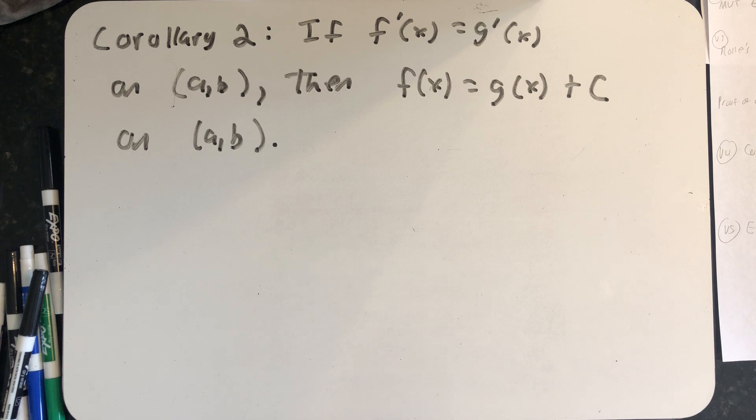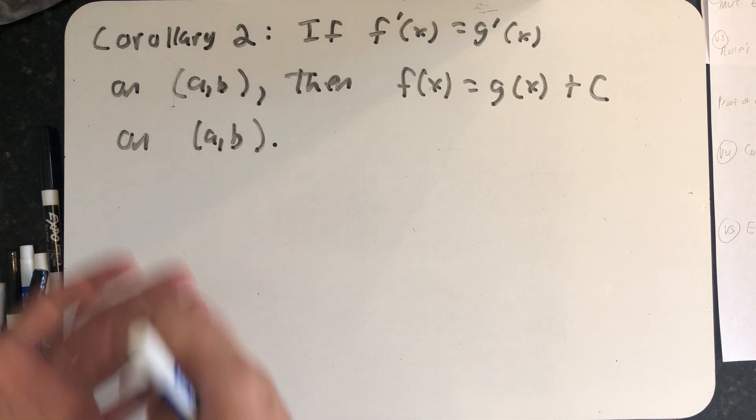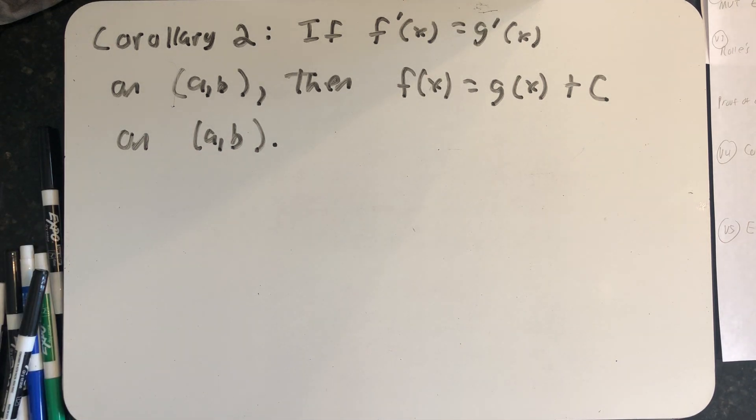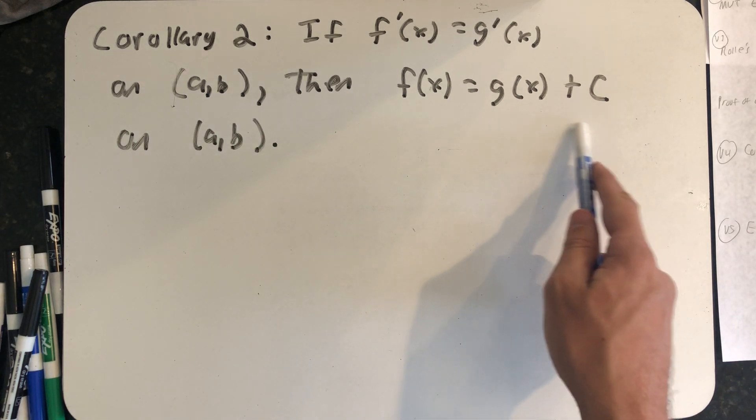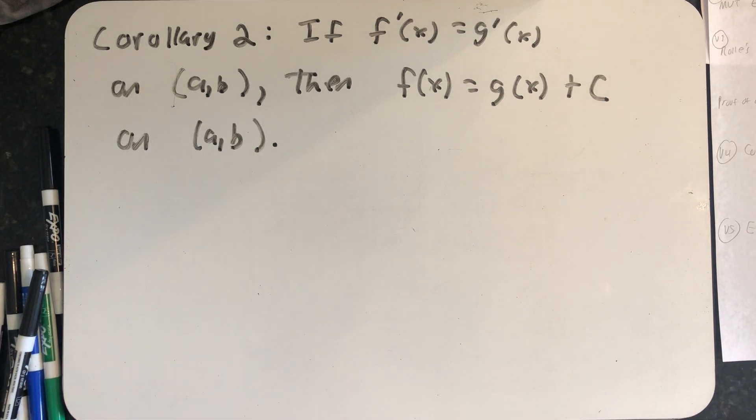If f prime of x and g prime of x are equal on an open interval (a,b), then f(x) is equal to g(x) plus some constant c on that interval.